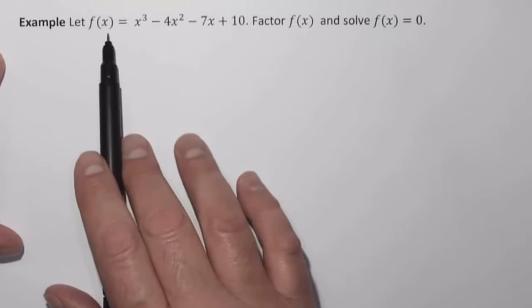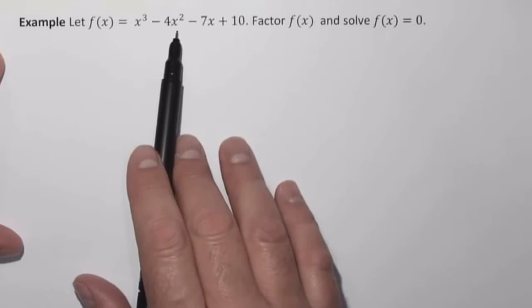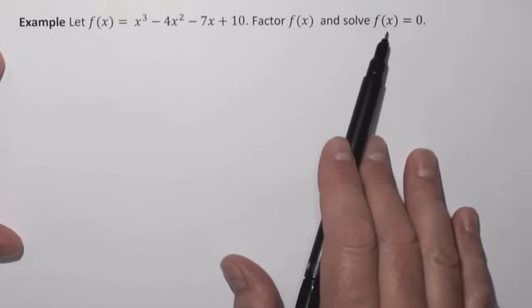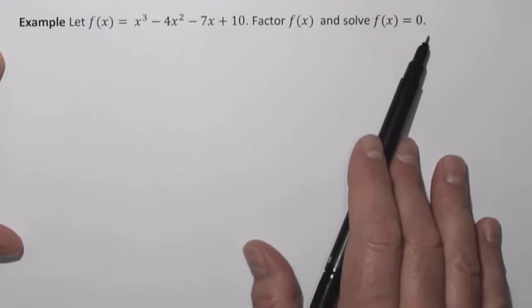So we want to let f of x equal x cubed minus 4x squared minus 7x plus 10. We want to factor f of x, and we want to solve f of x equals 0.